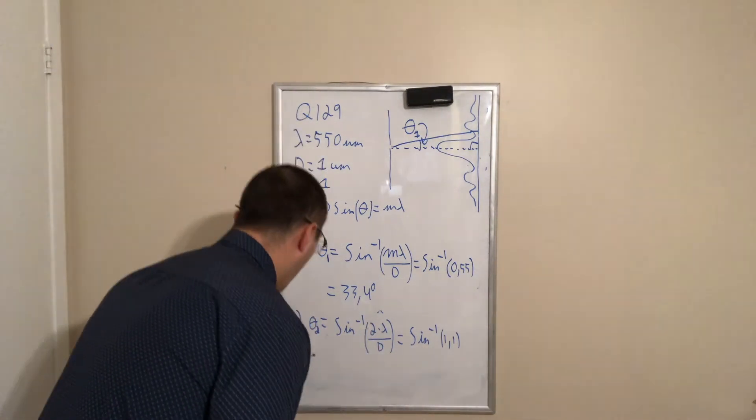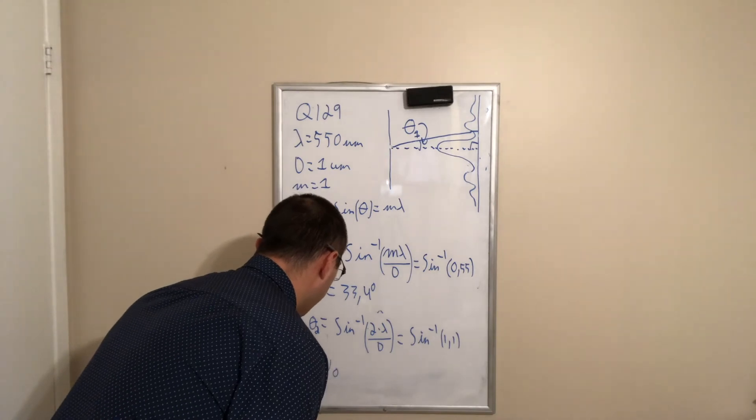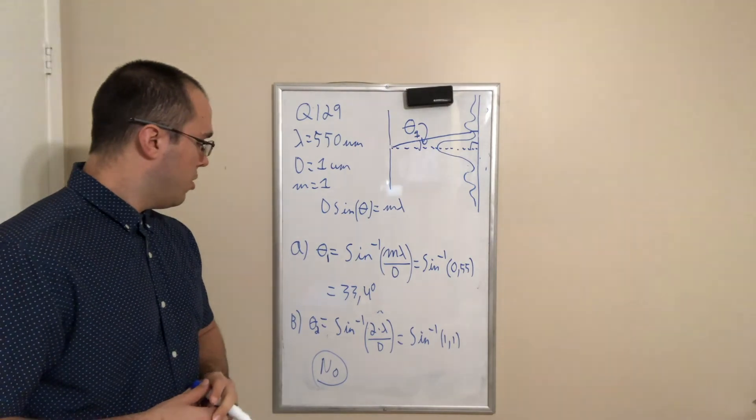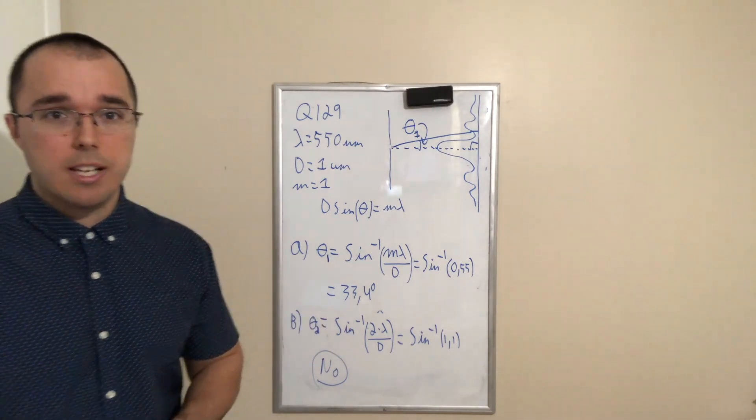So, no, there won't be a second minimum in this case. Alright? So that's it for this question. Let's solve some more examples.